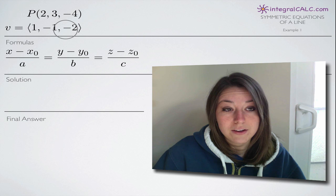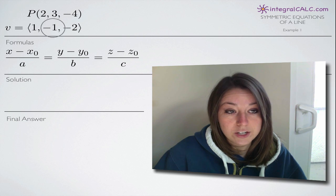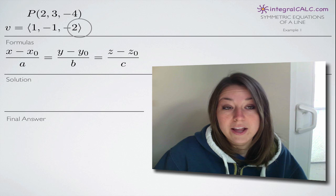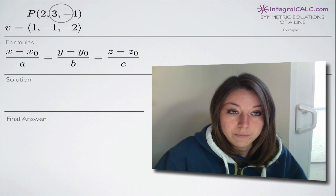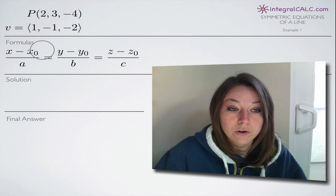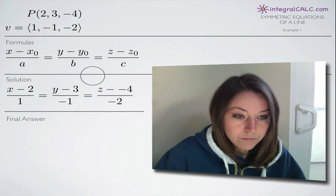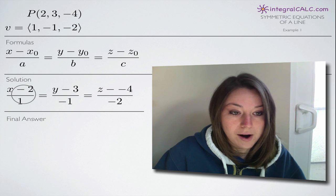That's always going to be the case. You're always going to plug in the three direction numbers from your vector for a, b, and c, and the three coordinates from your point P for x sub zero, y sub zero, and z sub zero. Let's go ahead and plug those in—that's going to be the solution to our problem.